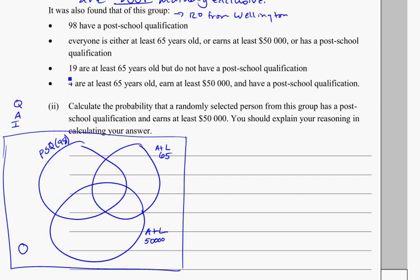Next thing for us, 19 are at least 65 years old but do not have a post-school qualification. So that's telling me that this group here are going to be 19. That's between the middle section here and this section over here, so I'm just going to highlight that in there. That both of those together should be 19. And they've also told me that there's 4 that are at least 65, earn at least $50,000, and have a post-school qualification. So that's the middle category, obviously, because all of them are in there.